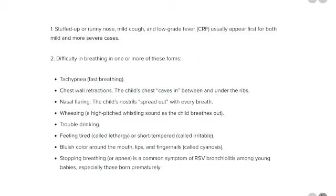The difficulty in breathing can present as tachypnea — that's fast breathing. It can present as chest wall retraction, where the child's chest caves in between and under the ribs — intercostal and subcostal retractions. You can have nasal flaring where the child's nostrils spread out with every breath. There's wheezing. There could be trouble drinking and feeling tired — lethargy — or the child may be irritable. Due to difficulty exchanging oxygen in the alveoli, there could be cyanosis, a bluish discoloration around the mouth, lips, and fingernails. In very young babies, there could be complete absence of breathing — apnea.